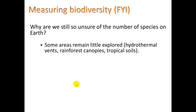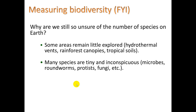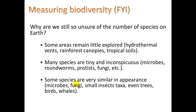Why are we so unsure of the number of species? Some areas remain little explored, like the ocean — especially hydrothermal vents — rainforest canopies, and tropical soils with their different types of microorganisms. Many species are tiny and inconspicuous: microbes, roundworms, fungi, etc., which can all be microscopic. Some species are also very similar in appearance — microbes, fungi, small insects, and even trees, birds, and whales — making it difficult to distinguish whether two organisms are actually different species.